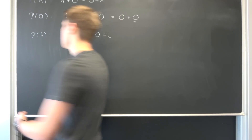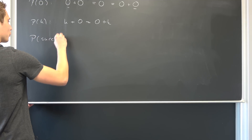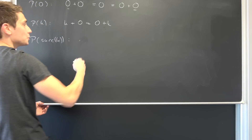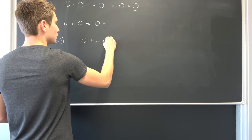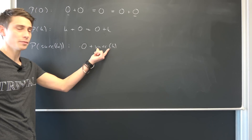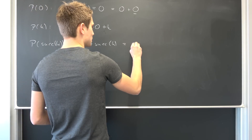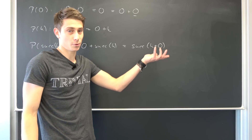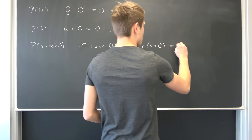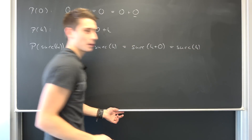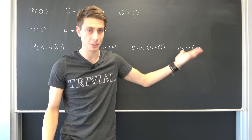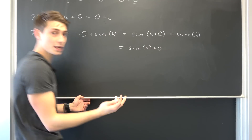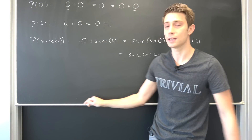We want to show this ensures P(succ(k)). Let's start from the left: 0 + succ(k). By the second rule of addition, this is succ(k + 0). By the first rule of addition, k + 0 = k, so this is succ(k). By the first rule of addition we can add zero without changing anything, giving succ(k) + 0. Wait — this should be succ(k + 0), which equals succ(k). Then adding zero: succ(k) = succ(k) + 0. We have shown that zero commutes with every element of the natural numbers.